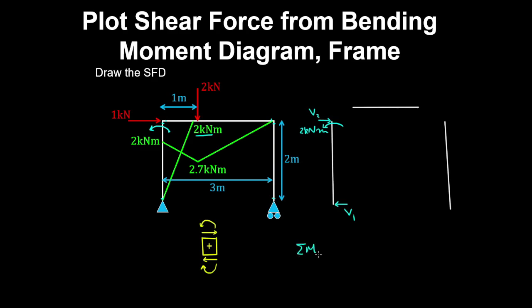So if we take an equilibrium of moments on the top of the column, with anticlockwise being positive, we have minus shear force 1 by the moment arm of 2m, plus 2kNm is equal to 0. And therefore V1 is 1kN. And by horizontal equilibrium of forces, that's also equal to V2. So therefore the shear force diagram in this column is constant, with a magnitude of 1kN.